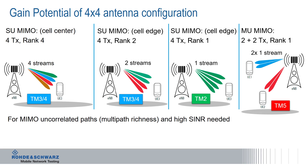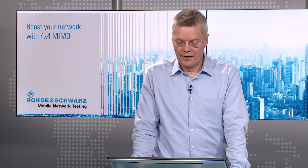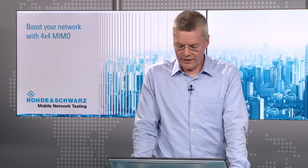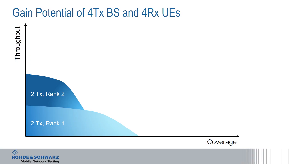So all in all, you see that there is much more improvement in capacity than only 4x4 MIMO in a favorable position. We try to visualize the complete gain potential in the following graph. The graph shows throughput versus coverage, and what you see in blue is the situation with legacy LTE smartphones — so 2x2 MIMO.